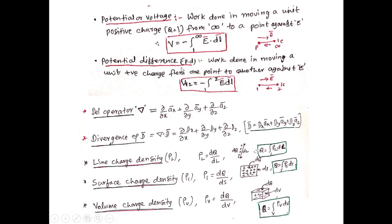Next, potential difference is the work done in moving a unit positive charge from one point to another against field E bar. Therefore, V1 = ∫₁² E bar · dL bar. In electromagnetic theory we use the DEL operator, which is the partial derivative along three axes: ∂/∂x a-hat + ∂/∂y a-hat + ∂/∂z a-hat.